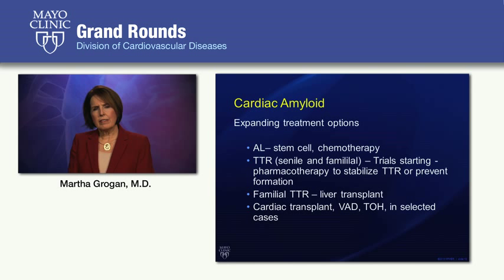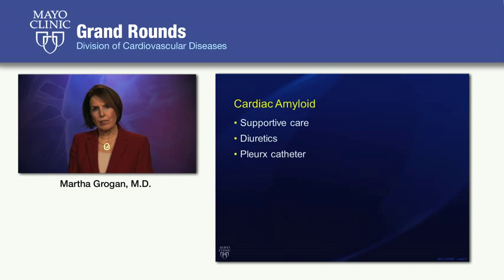In very selected patients of any type, cardiac transplantation is considered. Ventricular assist device and total artificial heart have been used as a bridge to transplant in highly selected patients. For cardiac-specific care, we are largely limited to supportive care, diuretics, and sometimes a pleurex catheter for recurrent pleural effusions. It's very important to educate the patient and family about which type of cardiac amyloid they have, because the prognosis differs so much.